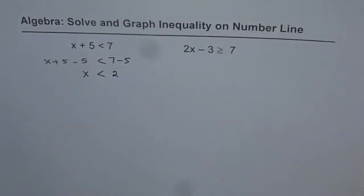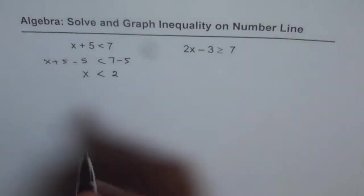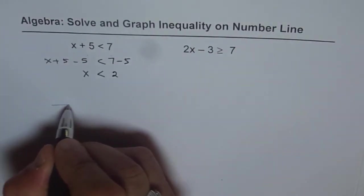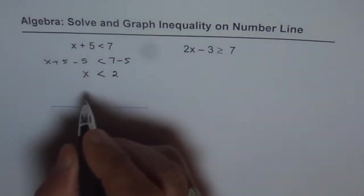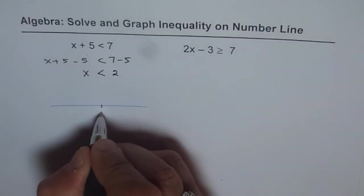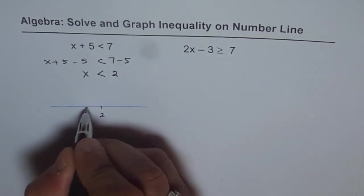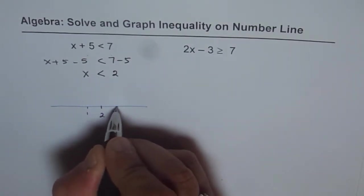Now, how do we represent this solution on a number line? That is what we need to do. That is the next part of this question. So draw a number line and mark your critical number, which in this case is 2. Let's say 2. So you can write numbers on the side, which will be 1, 2 and 3.